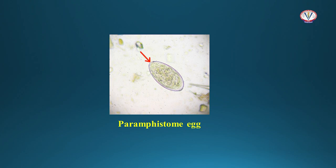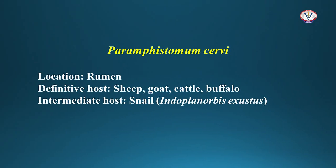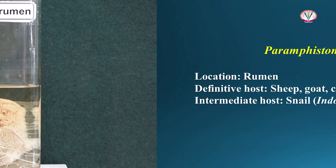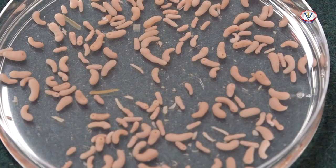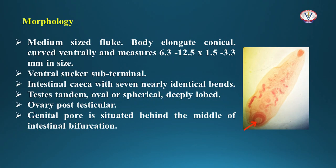Paramphistomum cervi is present in the rumen of sheep, goat, cattle, and buffalo. The intermediate host is snail Indoplanorbis. A medium-sized fluke with an elongate, conical body curved ventrally. The ventral sucker is subterminal. The intestinal caeca have seven nearly identical bends. Testes are tandem in position, oval or spherical in shape and deeply lobed. The ovary is post-testicular, and the genital pore is situated behind the middle of the intestinal bifurcation.